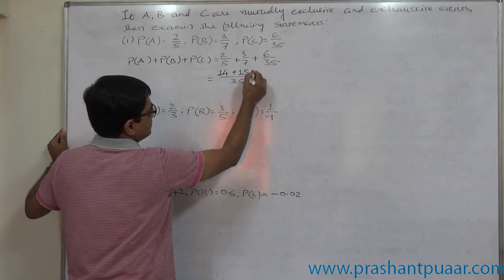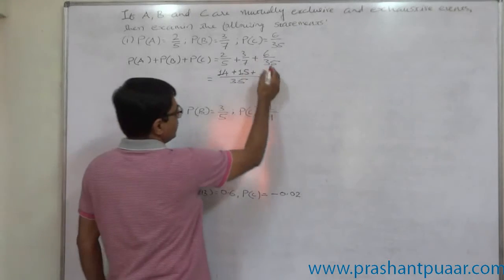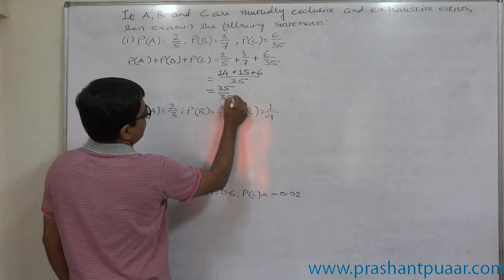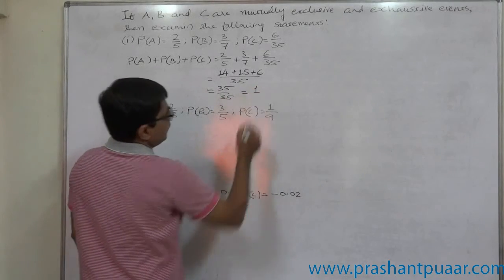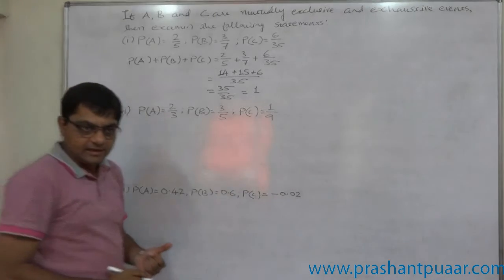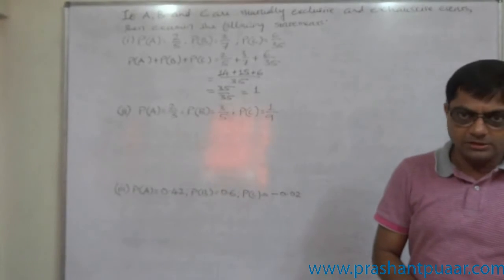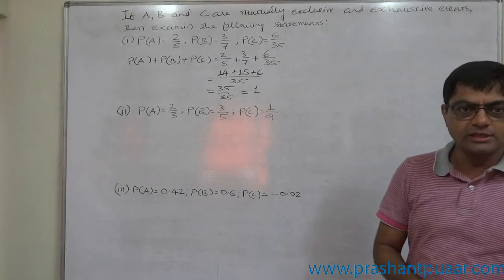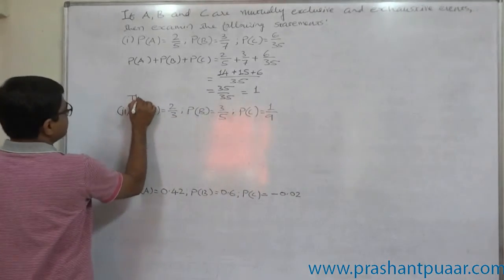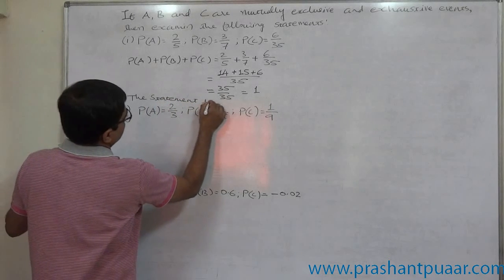Plus 35 divided by 35 is one, one into six is six. So it is 35 by 35, that means one. A, B and C are mutually exclusive and exhaustive events. The sum of the probability of all these three should be one. And it is one. So the statement is true.